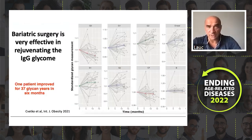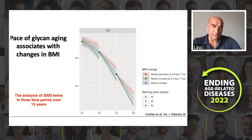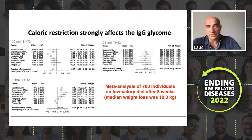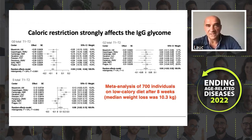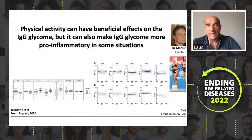Bariatric surgery can significantly improve glycan age — we had a patient improving by 37 glycan years in six months. Not everybody improves that much, but the majority improve significantly. Regular weight loss also seems to work. Among 2,000 twins tracked over 20 years, those gaining weight were aging faster than those losing weight. In a study of 1,000 people across eight centers in Europe on a low-calorie diet, the diet reduced glycan age in everybody, but nobody can maintain a low-calorie diet long-term. Five different maintenance diets were tested, and on each one some people improved and some got worse — so it is highly individual and there is no magic diet. The same goes for exercise: the majority of people who started exercising in middle age actually overtrained and got worse, so exercise has to be carefully optimized.